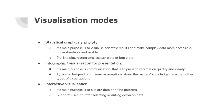The first type of visualization is statistical graphics or plots. Its main purpose is to visualize scientific results and make complex data more accessible, understandable, and usable. You can think of a line plot, a histogram, a scatter plot, or a box plot — these are the traditional statistical graphics.